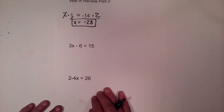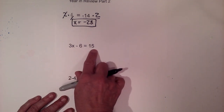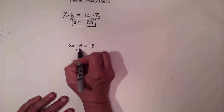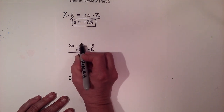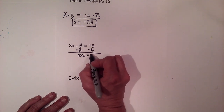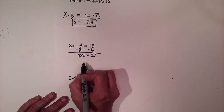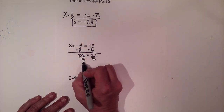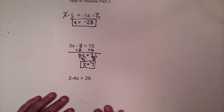Now let's look at a two-step equation. We have three x minus six is equal to fifteen. To solve for x, we're going to add six to both sides. The sixes cancel, giving us three x is equal to twenty-one. Then since three times x equals twenty-one, we divide to do the opposite operation, so x equals seven.